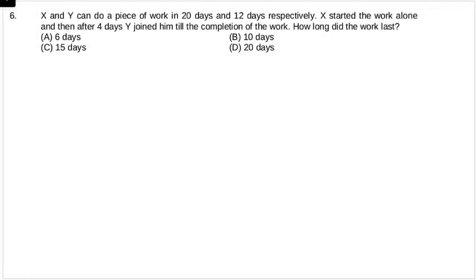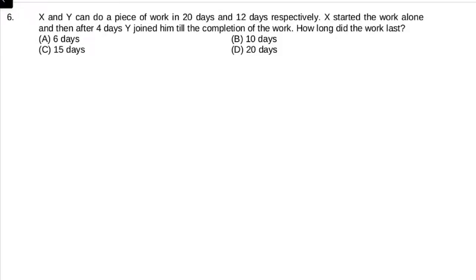Question number 6. In this question it is saying that X and Y can do a piece of work in 20 days and 12 days respectively. X started the work alone and then after 4 days Y joined him till the completion of the work. How long did the work last?